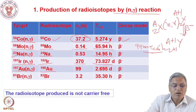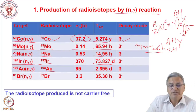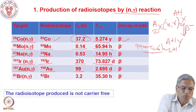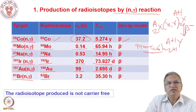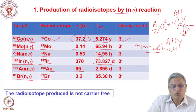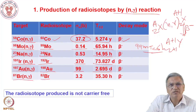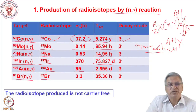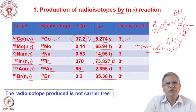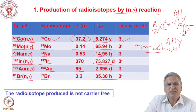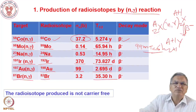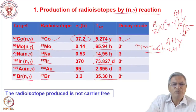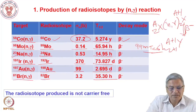Gold-198 is produced from Au-197 N-gamma with a half-life of 2.695 days and is used in many industrial applications. Bromine-82 is produced from Br-81 N-gamma and can be prepared as a gaseous isotope tracer, for example as ethyl bromide. With a half-life of 35 hours, Br-82 is used to trace the path of liquids or gases — for example, to locate leaks in underground petrochemical pipelines.